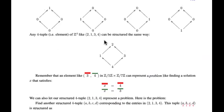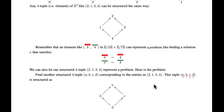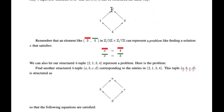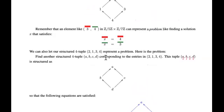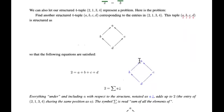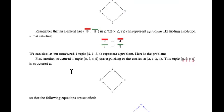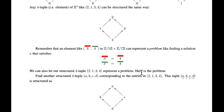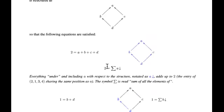We're going to take a four-tuple and output a solution. Here's the problem: given a structured four-tuple, we're going to find another one — that's the solution — corresponding to these entries in such a way that the top entry, two, is the sum of everything below it in this tuple. So a plus b plus c plus d equals two. Two is the sum of everything including a and below it.